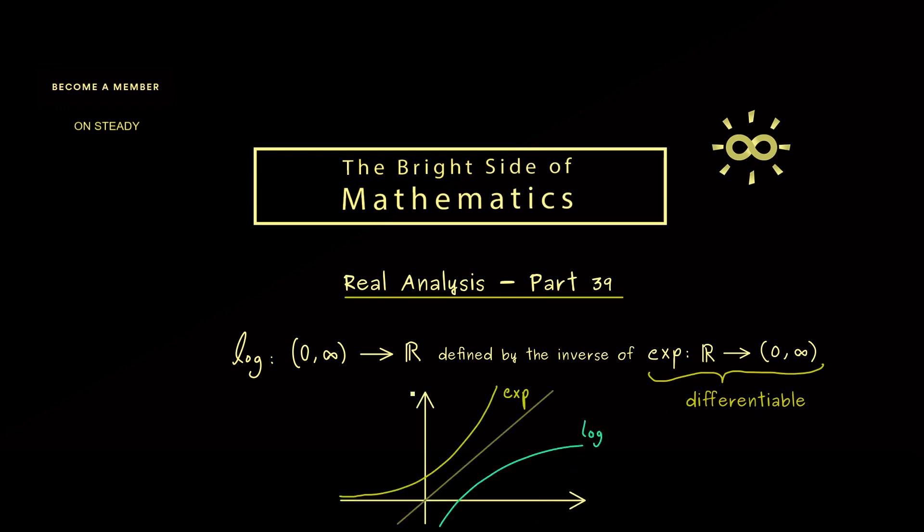Now when we look at the coordinate system and at the two curves of the functions, then we see that we get the logarithm when we reflect the exponential function. Also we know differentiable means we have a slope here at each point. For example we have a linearization here. However when we reflect this linearization we also get one for the logarithm.